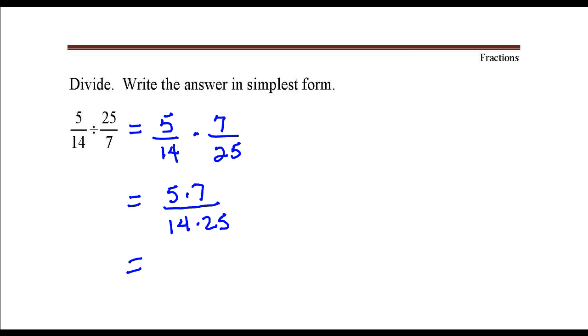I'm going to simplify this fraction by dividing out factors common to both numerator and denominator. 5 goes into itself once, it goes into 25 five times. 7 goes into itself once, it goes into 14 two times.